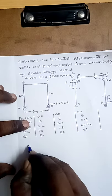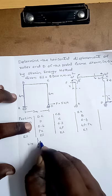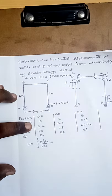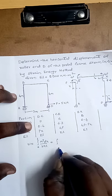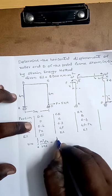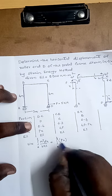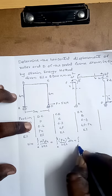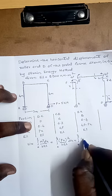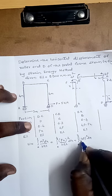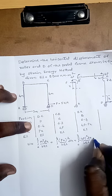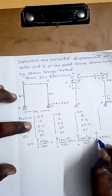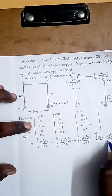Now we will calculate the strain energy stored: U = ∫₀ᴸ M²dx / 2EI for the entire frame. This equals: for the first portion (0 to 4), (PX)²dx / 2EI; for the second portion (0 to 3), (4P)²dx / 2EI; and for the third portion (0 to 4), (4P − PX)²dx / 2EI.